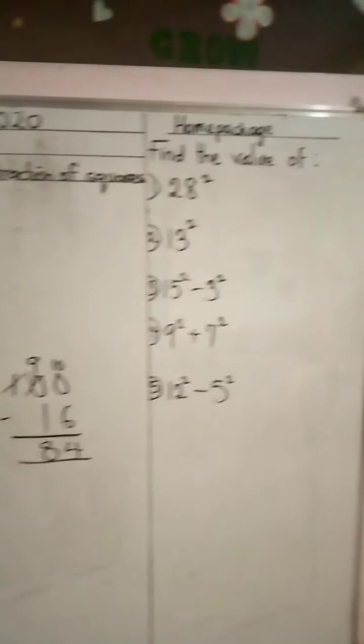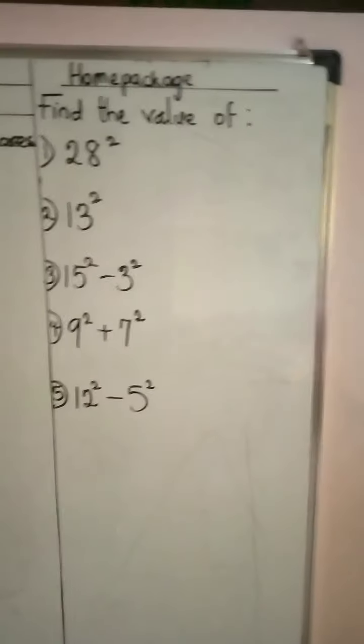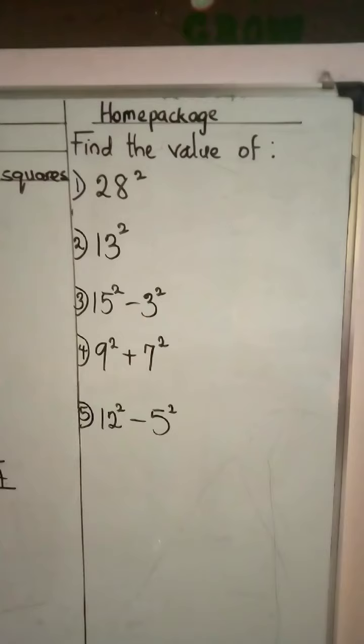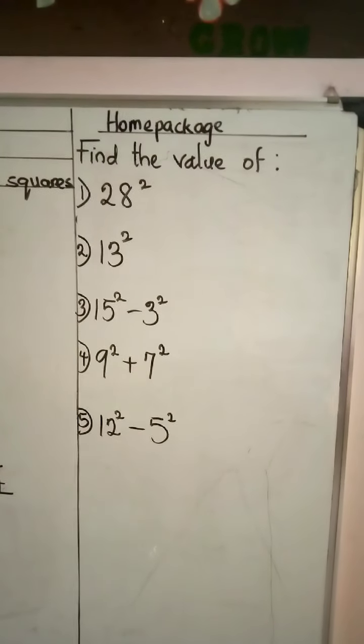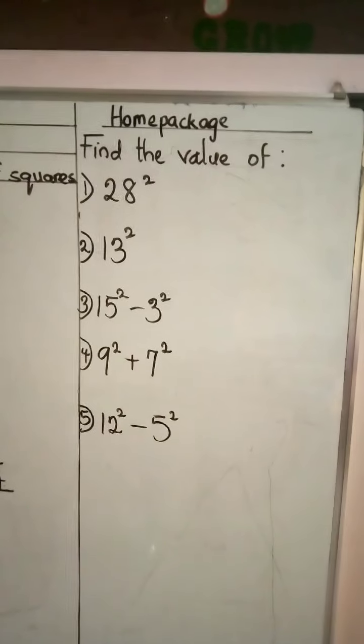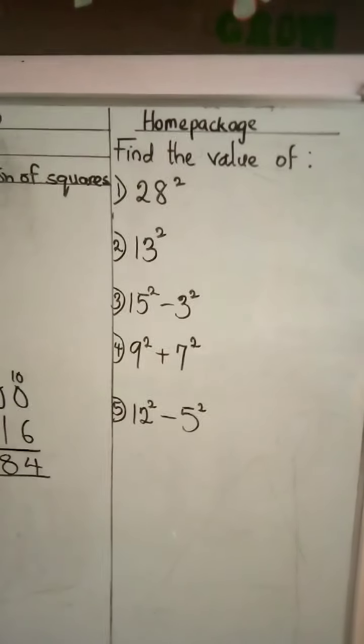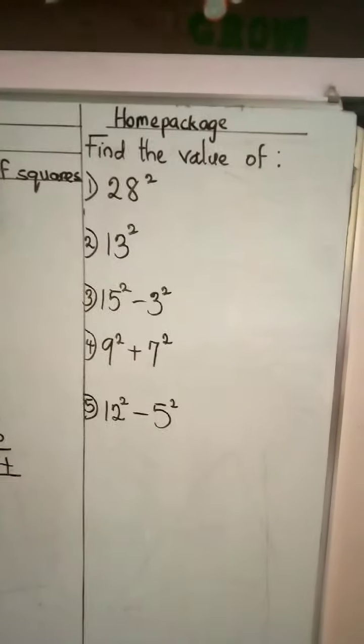Okay, on the other part of the board, we have your home package. It says find the value of these numbers on the board. 28 squared, 13 squared, 15 squared minus 3 squared, 9 squared plus 7 squared, and then 12 squared minus 5 squared.